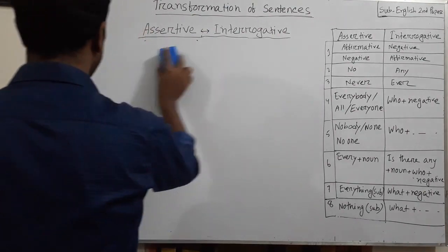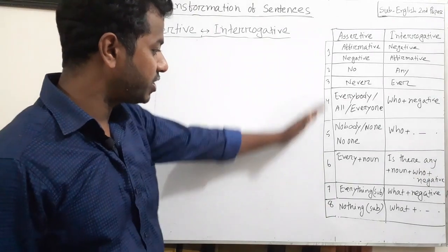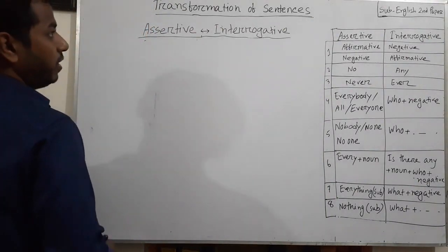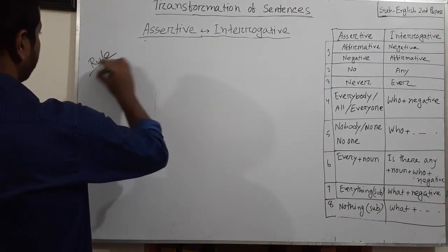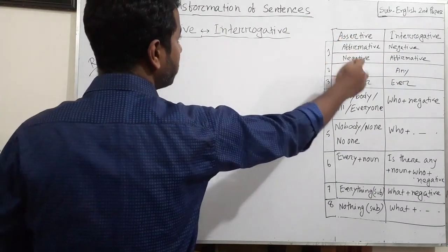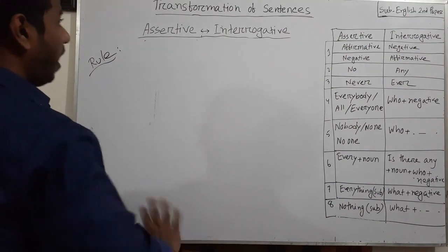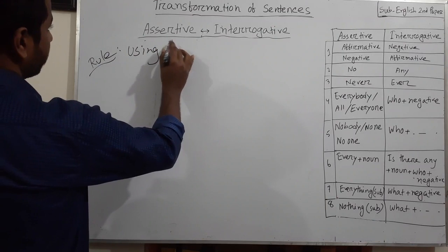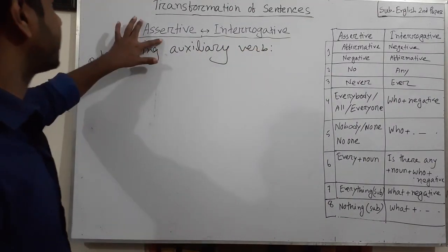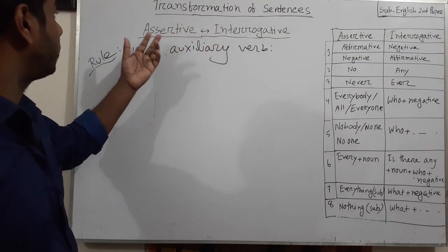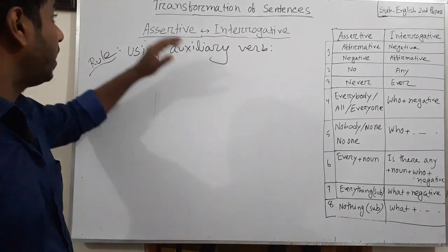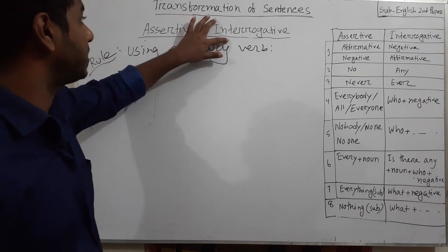Now let us discuss how to change an assertive sentence to interrogative sentence. Look at this board — I have given a chart of the rules. I will discuss step by step all these rules. First, look at rule one. If an assertive sentence is in affirmative form, it will be negative in interrogative sentence. If an assertive sentence is in negative form, it will be affirmative in interrogative sentence. We do this using auxiliary verb.